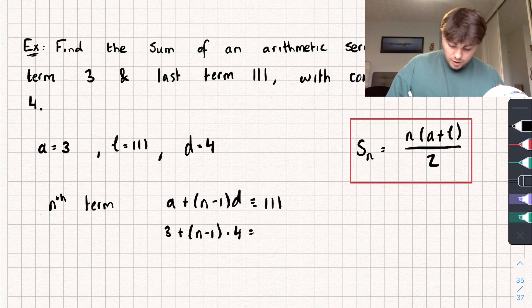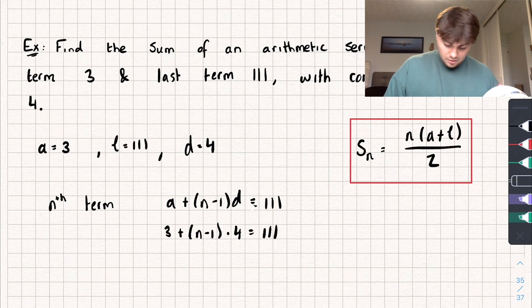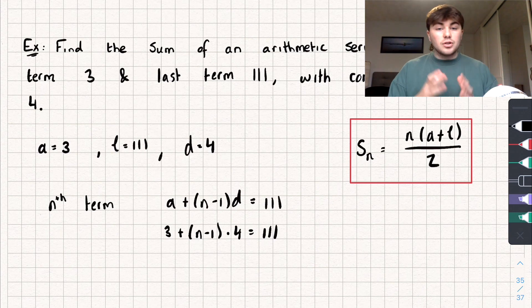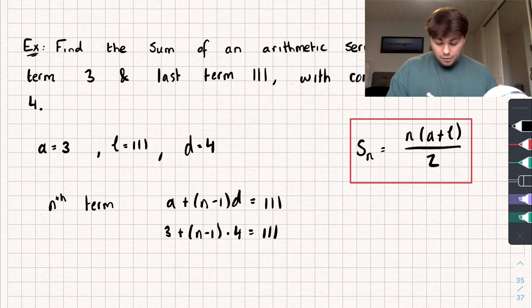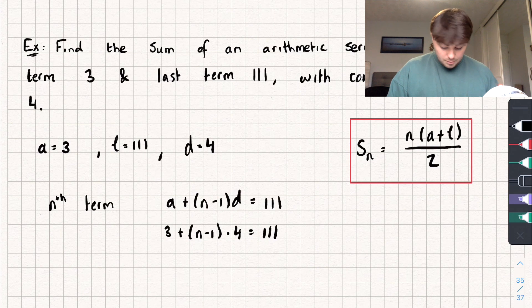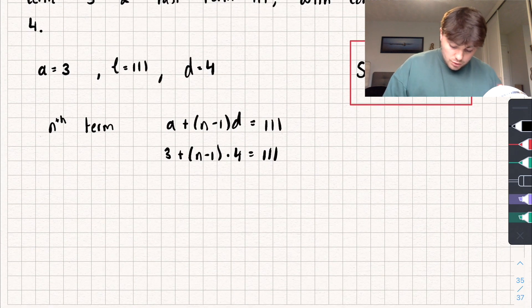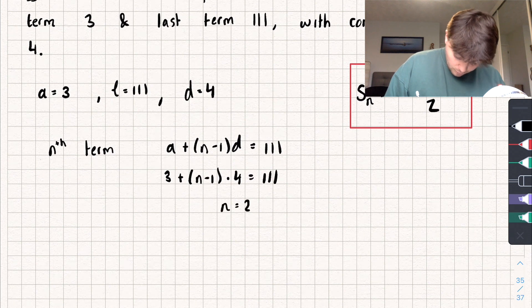I could now rearrange this to find a value of N, and that would give me the nth term, or the value of N that the 111th value is. So what is that term in my sequence? And that's what I want to sum up to. So if I rearrange this, I'll do 111 subtract 3, divided by 4 plus 1, and we get that N is equal to 28.